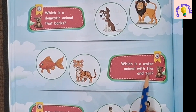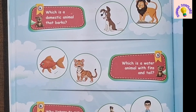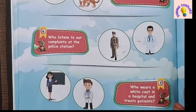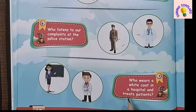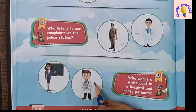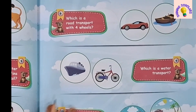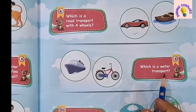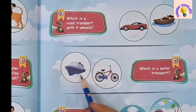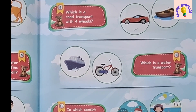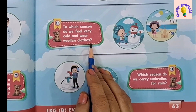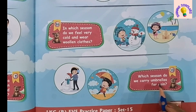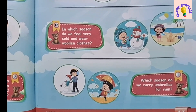Which is a water animal with fins and tail? Fish. Who listens to our complaints at the police station? Policeman. Who wears a white coat in the hospital and treats patients? Doctor. Which is a road transport with four wheels? Car. Which is a water transport? Ship. In which season do we feel very cold and wear woolen clothes? Winter season. Which season do we carry umbrellas for rain? Rainy season.